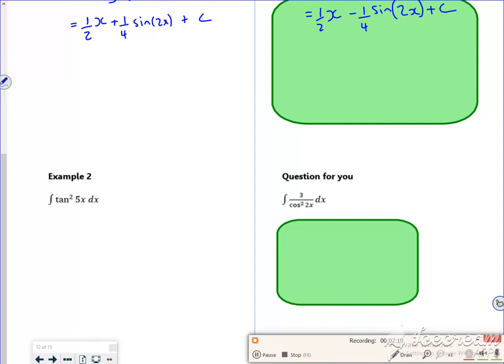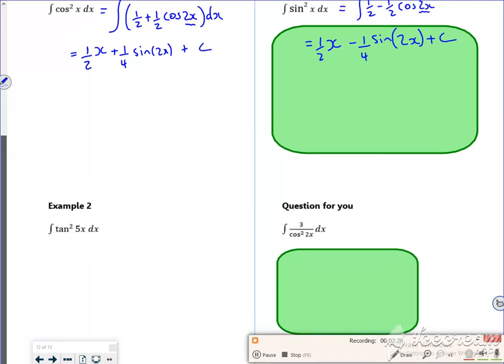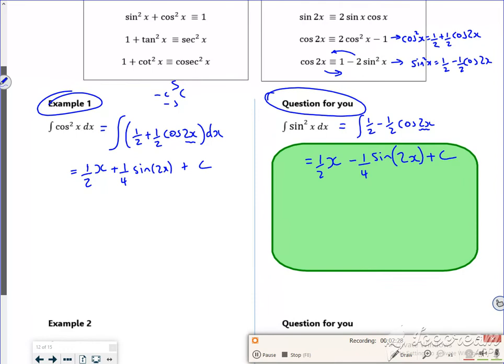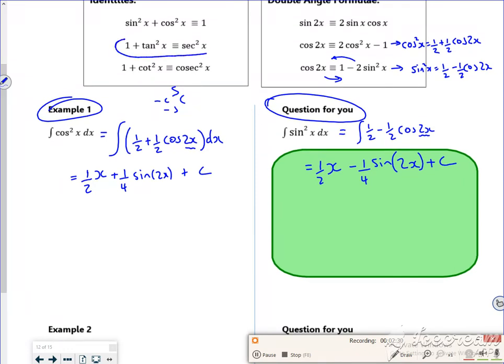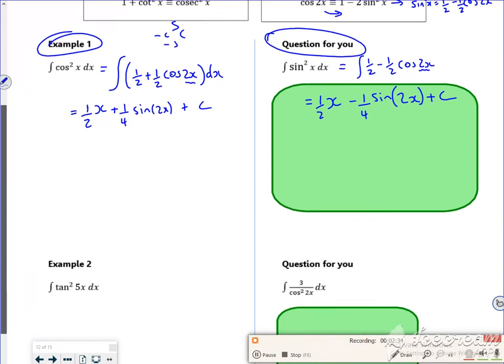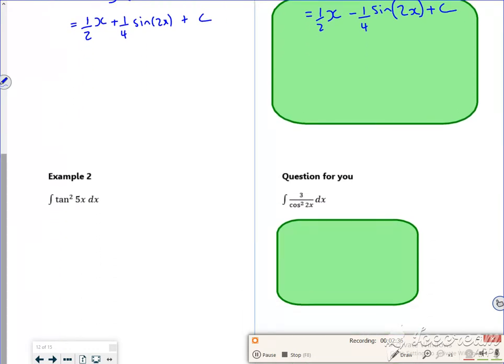Right, so tan squared. You've got to be careful, because if you integrate secant squared it goes to tan, but people get that confused the other way around. So I'm going to use this one here. I'm going to change tan squared into secant squared minus 1. So that will be secant squared of 5x minus 1.